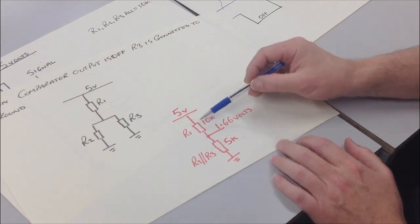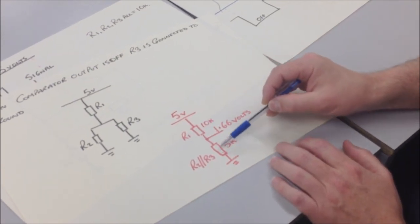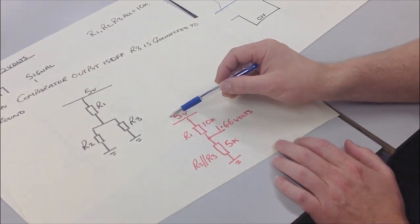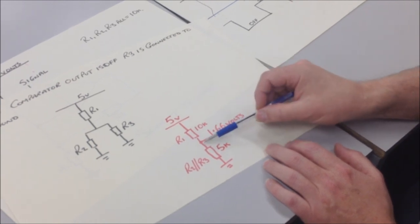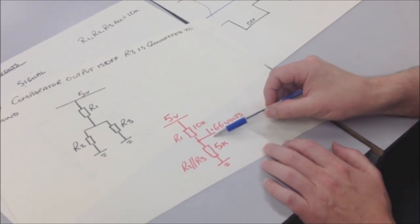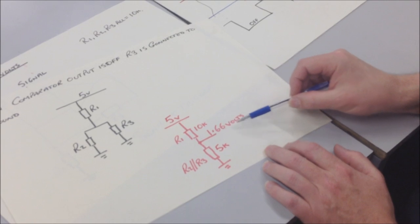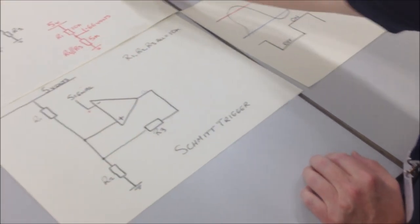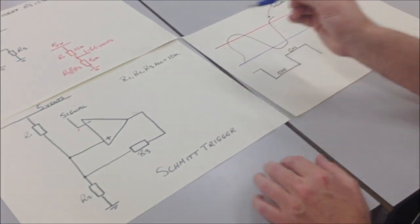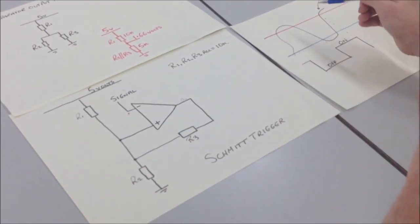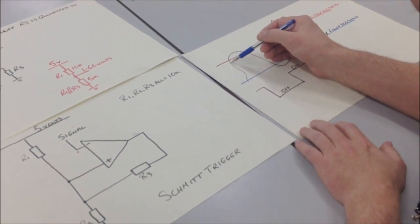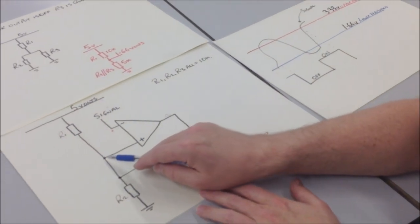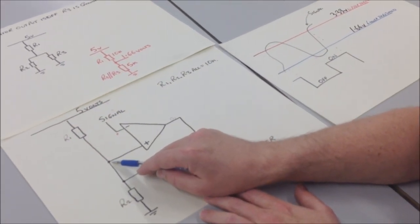Therefore we have a voltage divider that looks like this. And if we have a 5 volt supply, the midpoint of the voltage divider will give us 1.66 volts. Therefore, the threshold formed at this point, as soon as this comparator goes above the upper threshold, falls to 1.66 volts.